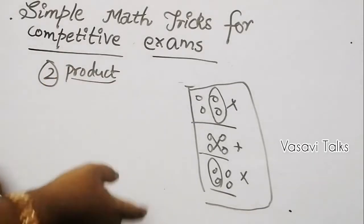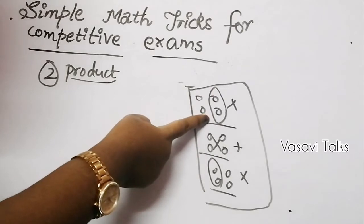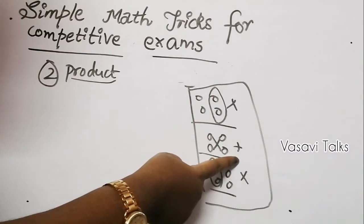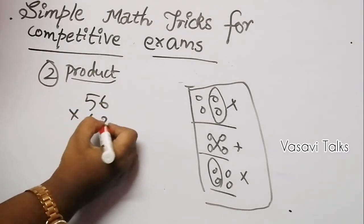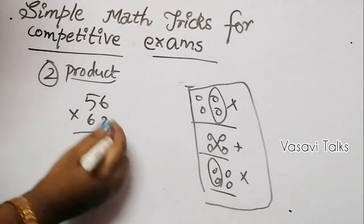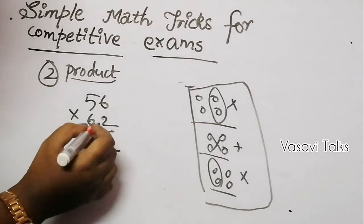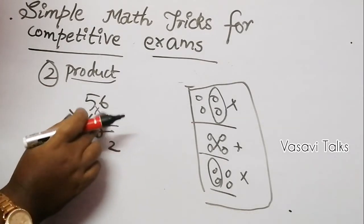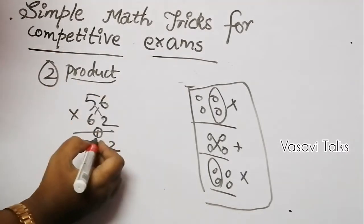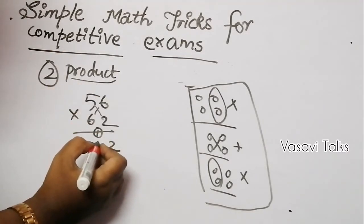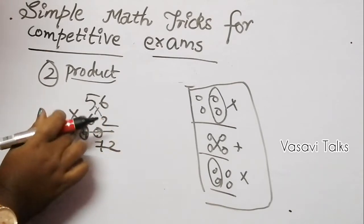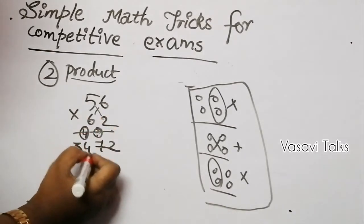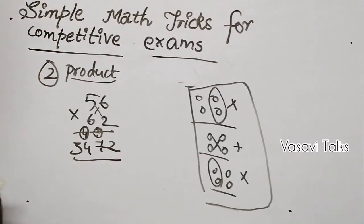Let's try 56 into 62 using the same method. First, units digits: 6 times 2 is 12 — write 2, carry 1. Cross multiply: 5 times 2 is 10, plus 6 times 6 is 36; 10 plus 36 is 46, plus carry 1 is 47 — write 7, carry 4. Finally, tens digits: 5 times 6 is 30, plus carry 4 is 34. So the answer is 3472.